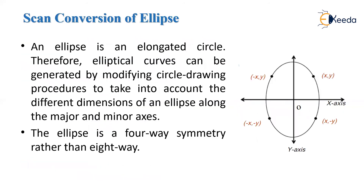Next is the scan conversion of ellipse. An ellipse is an elongated circle. Therefore, elliptical curves can be generated by modifying circle drawing procedures to account for the different dimensions along the major and minor axes. Unlike a circle which has 8-way symmetry with 8 octants, an ellipse has 4-way symmetry with only 4 octants. So if we calculate any one point, we can find the values of the other 3 points and draw the ellipse.